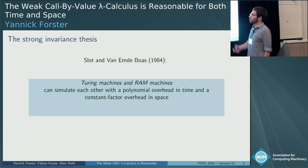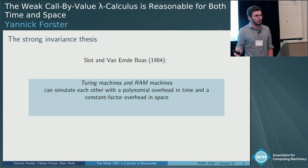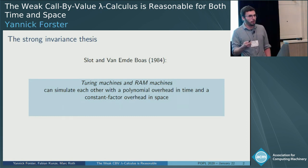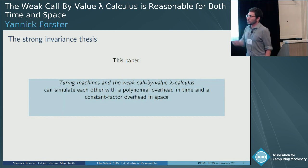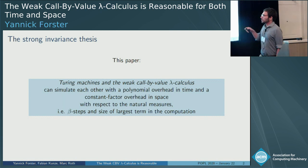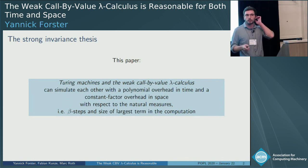What they technically proved is that Turing machines and RAM machines can simulate each other in this sense, establishing RAMs as reasonable machines. What we're proving in this paper is the same, just for Turing machines and the weak call-by-value lambda calculus—and more precisely, with respect to the natural measures for the lambda calculus, since it's not obvious what time and space mean.